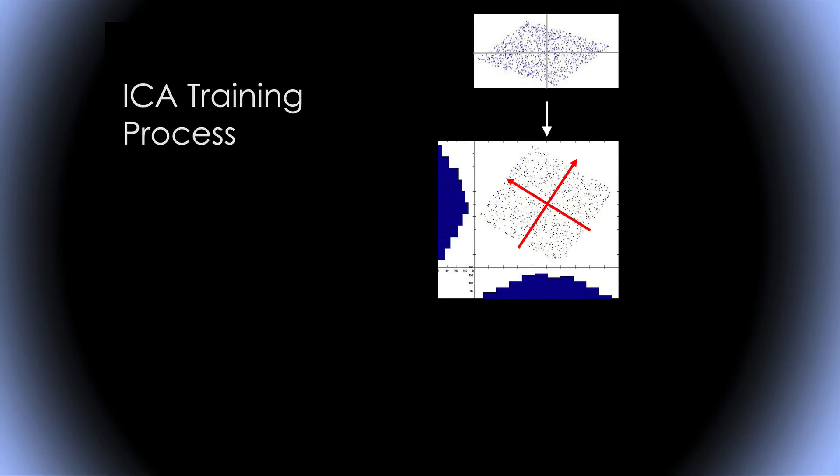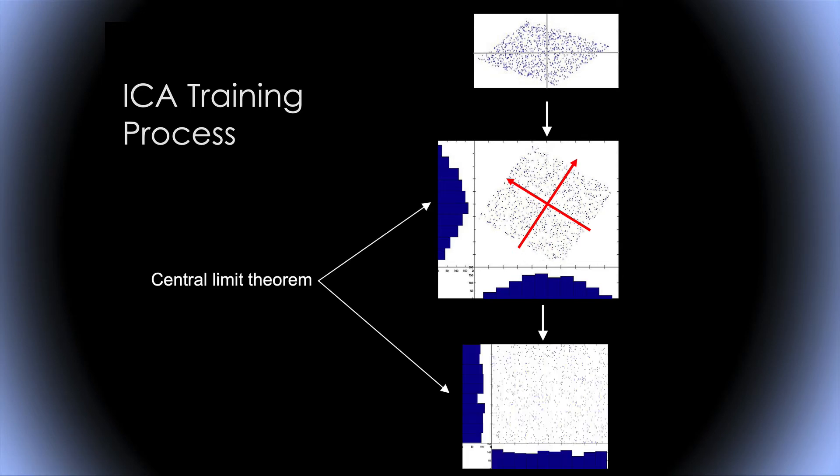This is better illustrated in this diagram here. This is not very realistic for EEG sources, but here we start, we have two axes, two variables, and the first step is to normalize each on each axis. That's a process that's called whitening. This is the projection of the data on the two axes. Then what ICA is going to do is rotate this axis, so as to make the projection on this axis as independent as possible. To rotate the axis, what it's going to do is maximize the entropy.